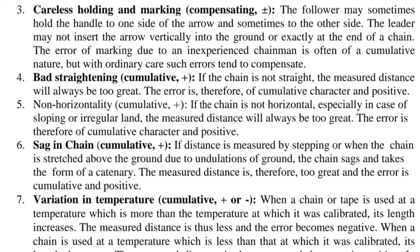3. Careless holding and marking — compensating, positive or negative. The follower may sometimes hold the handle to one side of the arrow and sometimes to the other. The leader may not insert the arrow vertically or exactly at the end of a chain length. The error of marking by an inexperienced chainman is often cumulative, but with ordinary care such errors tend to compensate. 4. Bad straightening — cumulative, positive. If the chain is not straight, the measured distance will always be too great.